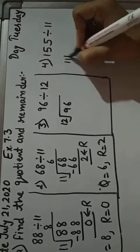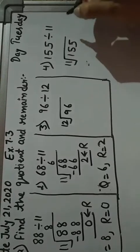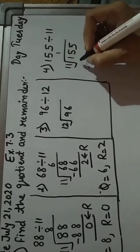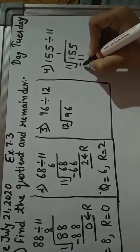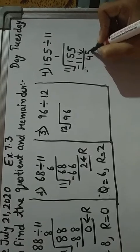Now I am doing here 155 divided by 11. 11 ones are 11. 5 minus 1 is 4. Now bring down 5, making 45.